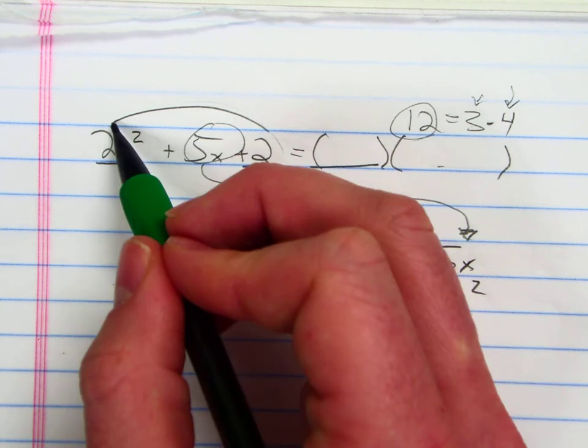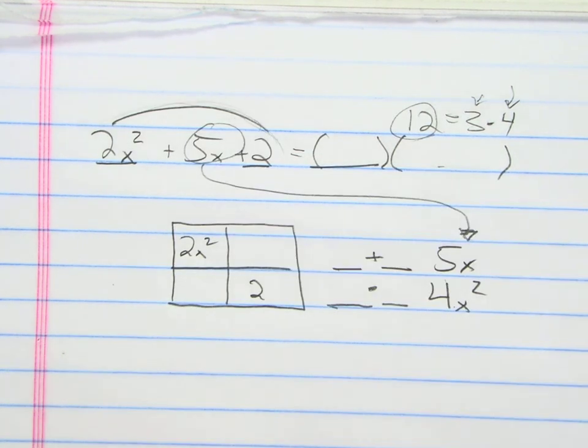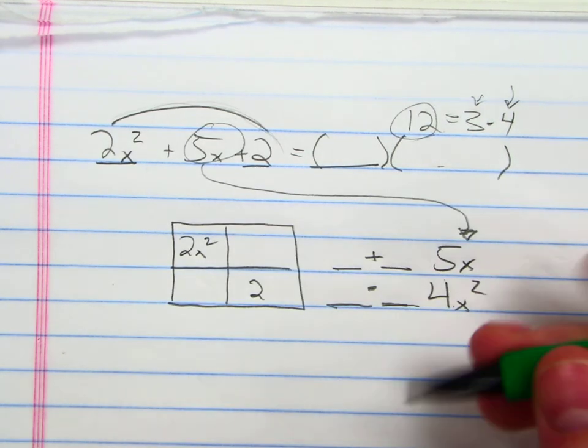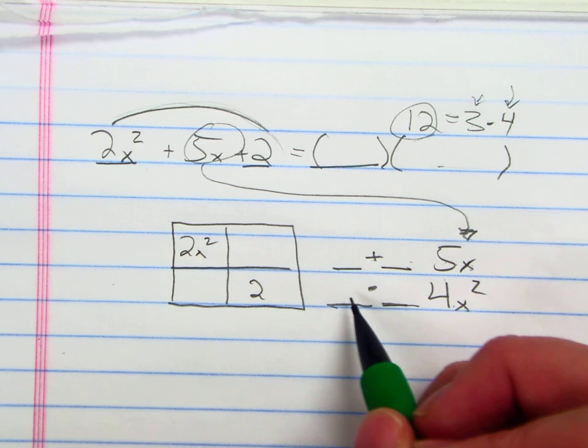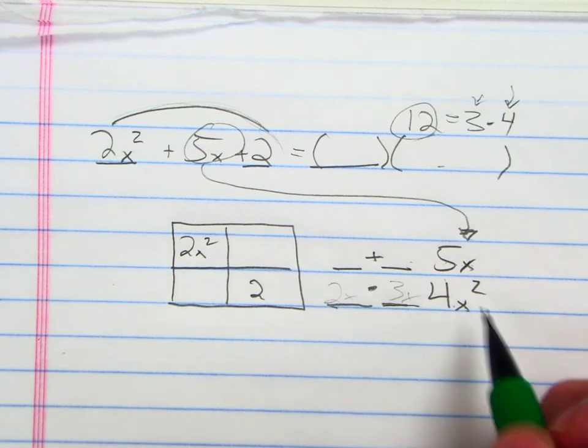Well let's see, what adds to make 5x? 2x and 3x add to make 5x. But do 2x and 3x multiply to make 4x squared? No, they would multiply to make 6x squared.